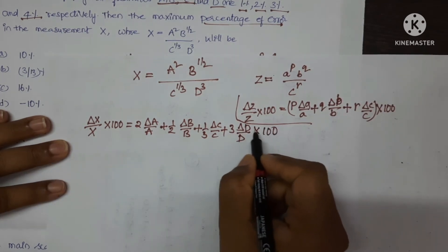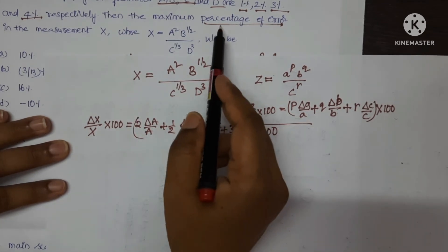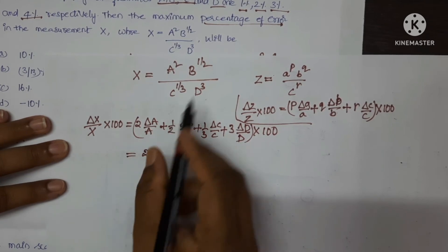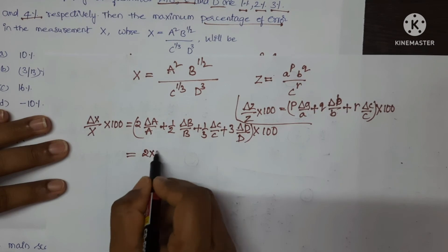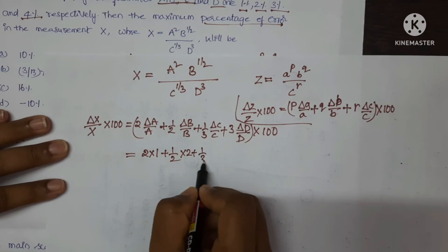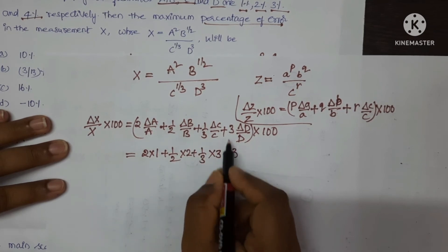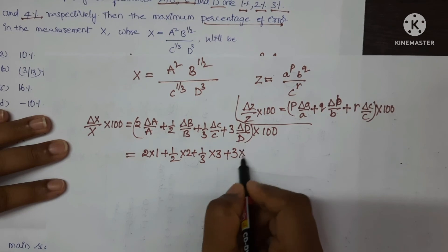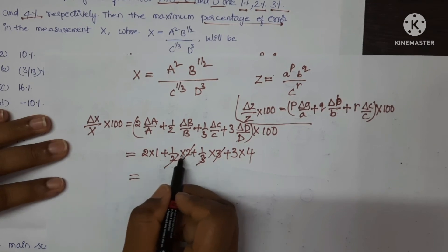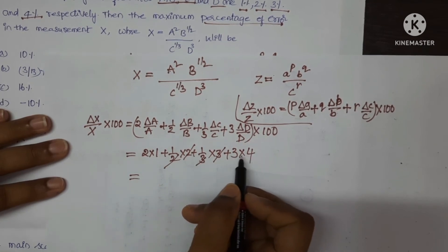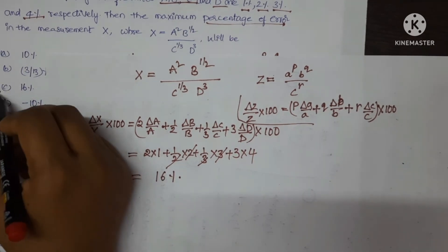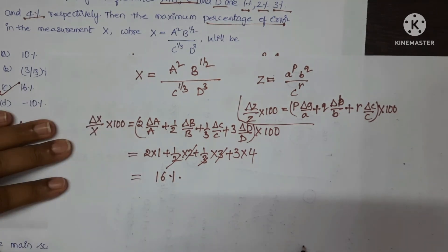Substituting the values: 2 into 1% plus 1/2 into 2% plus 1/3 into 3% plus 3 into 4%. The 2s cancel and the 3s cancel, giving 2 plus 1 plus 1 plus 12, which totals 16%. C is the correct option. Next question.